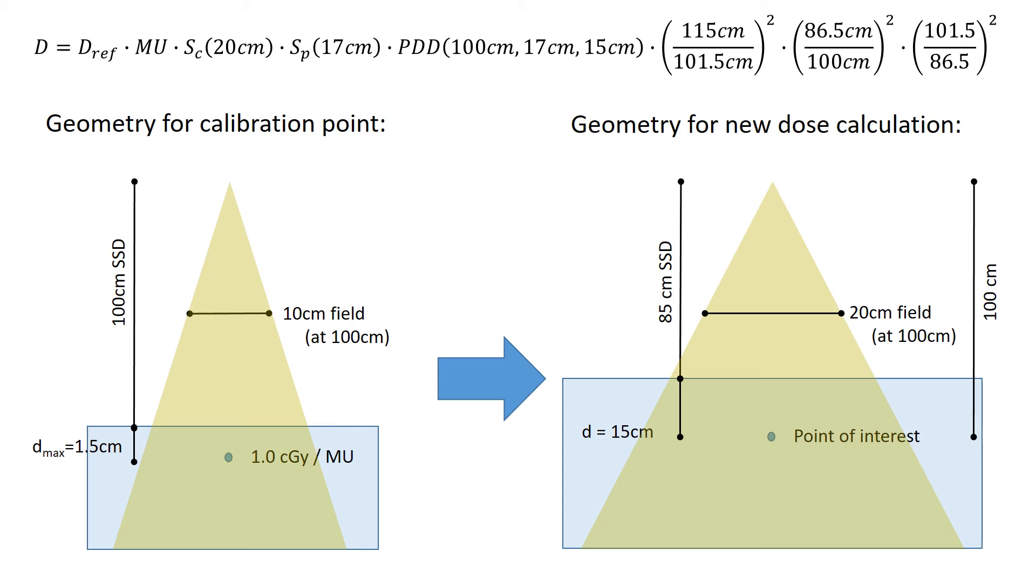And with that, we have all of our factors that we need. We can get our collimator scatter factor for a 20 field size, our phantom scatter factor for a 17 field size, our PDD for a 17 field size and a 15 cm depth, and then we have our f-factor input, and then our inverse square correction. And that will take us from this calibration geometry on the left to our new geometry on the right.